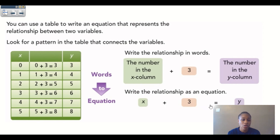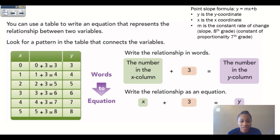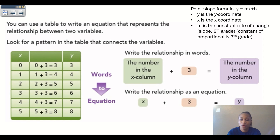If we want to write that in the point-slope formula — Y equals MX plus B — we write Y equals X plus three. Y is the Y-coordinate, X is the X-coordinate, and M is the constant rate of change. In 6th grade we call it unit rate, in 7th grade constant of proportionality, and in 8th grade it's called slope — but they all mean the same thing. If you know that, you can transfer what you learn in 6th grade to 7th and 8th grade.